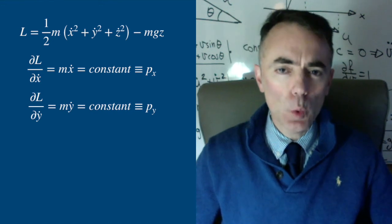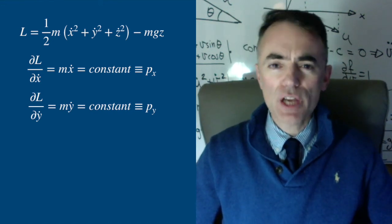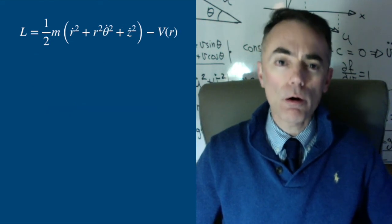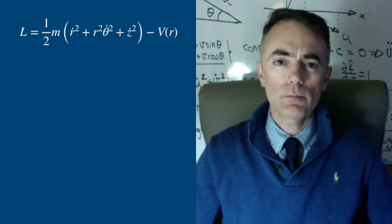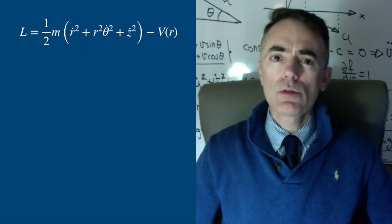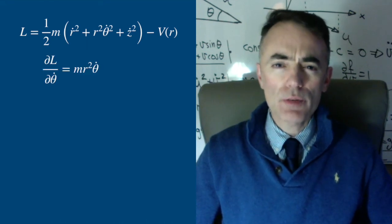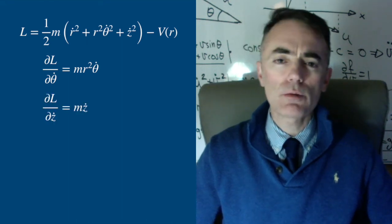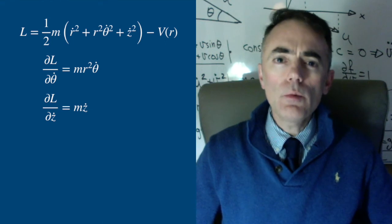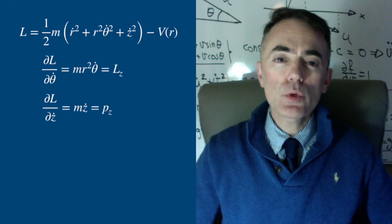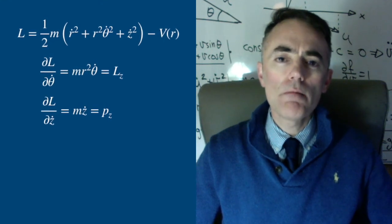Let's write in cylindrical coordinates the Lagrangian of a potential that depends on the distance to the origin — only depends on r. This Lagrangian has no dependence on theta and does not depend on z also. So the partial of the Lagrangian with respect to theta dot has to be constant, as does the partial of the Lagrangian with respect to z dot. Here we have conservation of linear momentum in the z coordinate, but also conservation of the angular momentum.